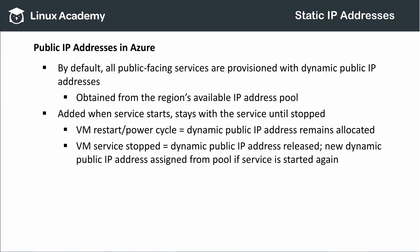However, if I ever stop the VM's underlying service, that dynamic IP address will be released back to the Azure pool for someone else to use. If I later opt to start the underlying virtual machine service, Azure will assign a new public IP address to my VM's network interface and, by proxy, the virtual machine itself.